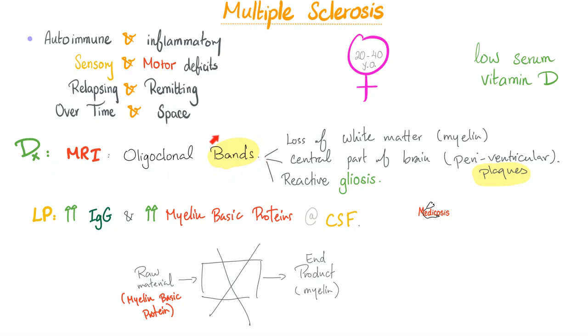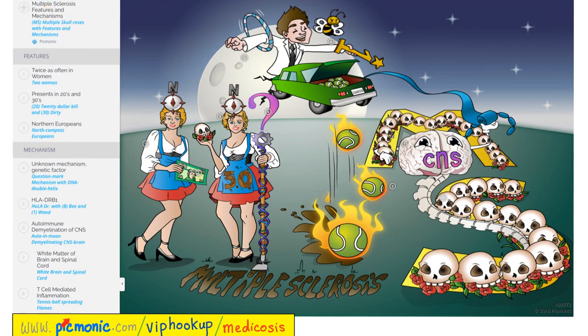Let's do an MRI. Oligoclonal bands—demyelination bands. Loss of white matter, central part of the brain, and reactive gliosis. Gliosis is a non-specific reaction to any injury or toxin. Let's do lumbar puncture. Increased IgG—you have tons of plasma cells and lymphocytes secreting tons of antibodies. Increased myelin basic protein. The myelin basic proteins are raw materials. If you're not making myelin or you're destroying the myelin, what happens to what's before it? It's going to increase.